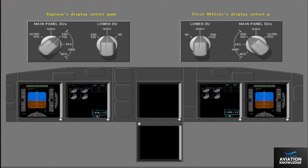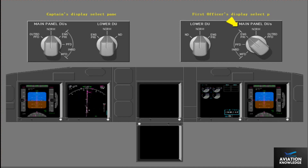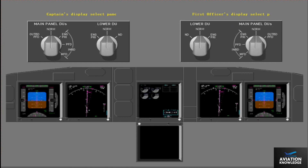Now let's look at the lower DU selector. Select engine primary with the first officer's lower DU selector. The primary engine display shows on the lower DU. Select normal with the first officer's lower DU selector. The lower DU blanks. The upper DU does not show the engine displays because the captain's and first officer's main panel DU's selectors are set to inboard engine primary. Select normal with the captain's main panel DU selector. The upper DU remains blank because the first officer's main panel DU selector is set to inboard engine primary. Select normal with the first officer's main panel DU selector. The displays are in their normal configuration.